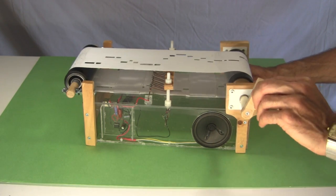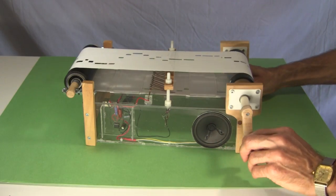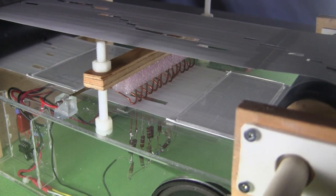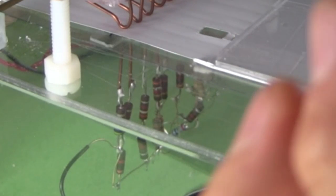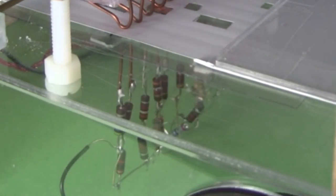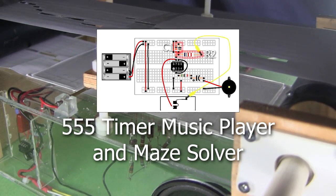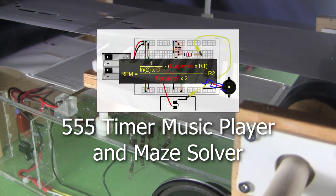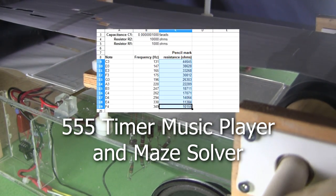With this music player, I was able to get a little more accurate than my straw trombone. I was able to select the resistance values for the resistors below here, so that the C actually was a C, and D actually was a D. But I explained how I did all that in my how to make a 555 timer music player in Maze Solver video.